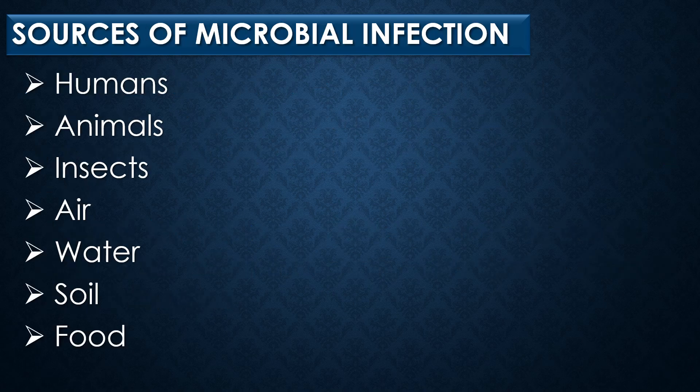Sources of microbial infection. Seven sources widely act as sources of microbial infection. These include humans, animals, insects, air, water, soil, and food.